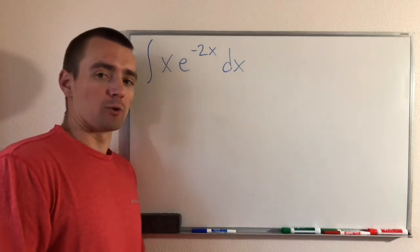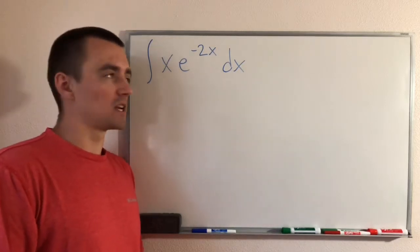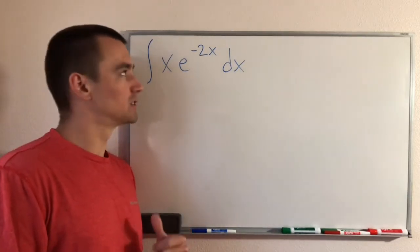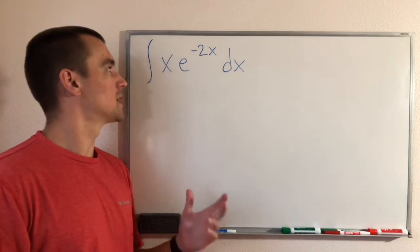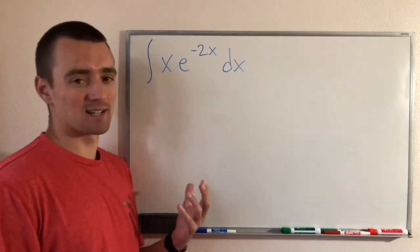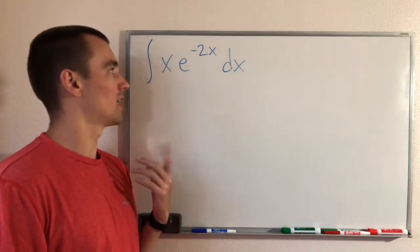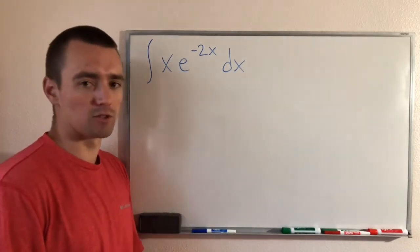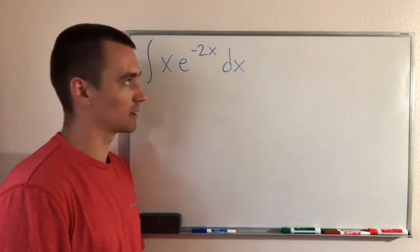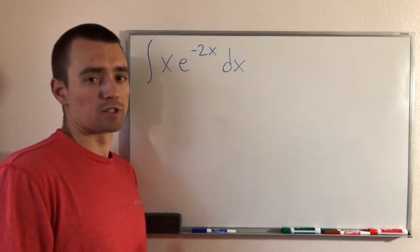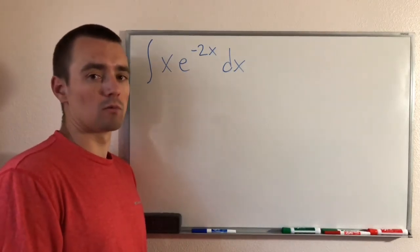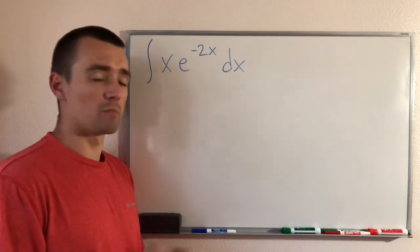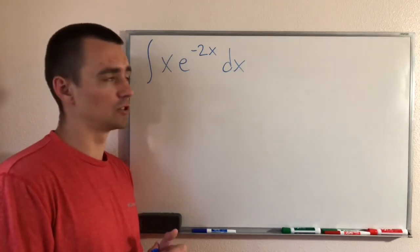Hey guys, Jake here, coming at you with another math problem today. Here's the problem we're going to be going over today. We're going to find the integral, or the antiderivative, of x times e to the negative 2x dx. There's a link in the description if you want to check out the book I found this problem from, but let's go ahead and jump into it.